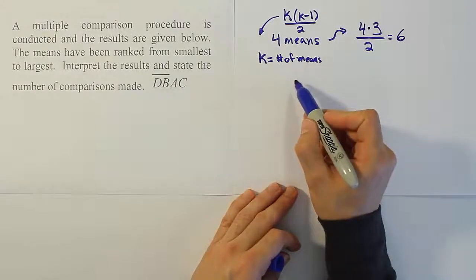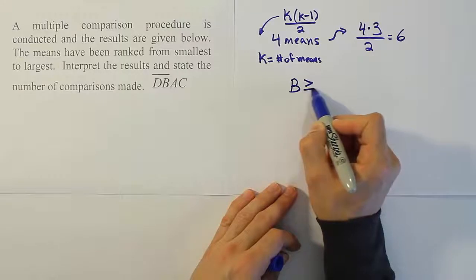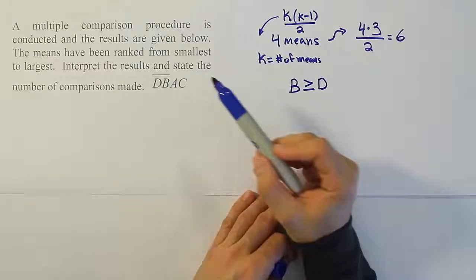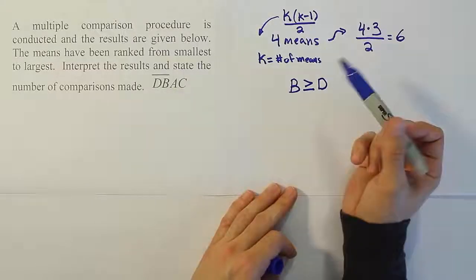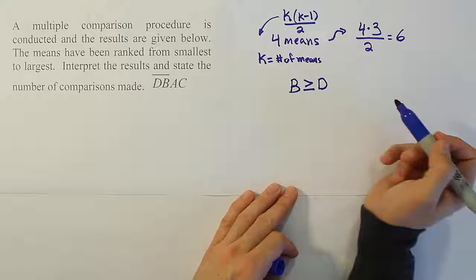So what we can say here is that essentially mean B is greater than or equal to D. We can see that from the drawing. It's to the right of D, but it's joined by a bar, so we have the equal to sign there.